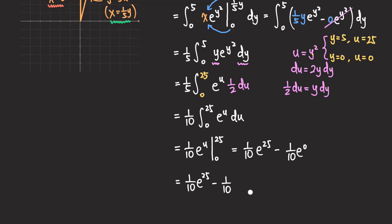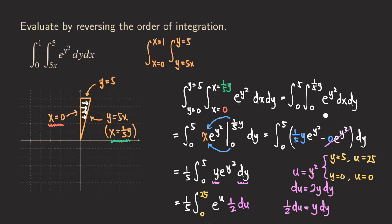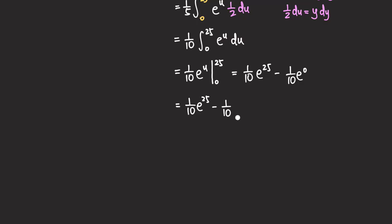So that is the final answer. By reversing the order of integration, we were actually able to compute this integral. Before, we had e to the y squared, and integrating with respect to y would have required methods beyond usual integration techniques. The answer doesn't look too simple, but it's good enough — we don't need to simplify further unless using a calculator. I'll do more examples like this next time, so please share the video and subscribe to the channel.